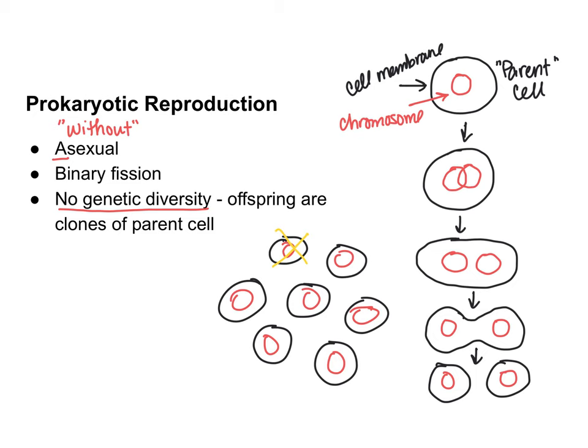then all of a sudden, since they're exactly the same genetically, if one is susceptible to, say, a disease or something, then they're all going to be susceptible. So even though prokaryotes reproduce asexually through binary fission with no genetic diversity, there are ways that prokaryotes do increase genetic diversity over time.